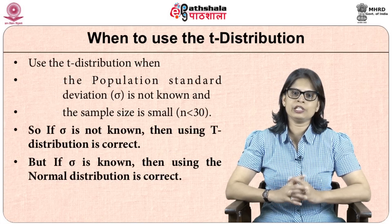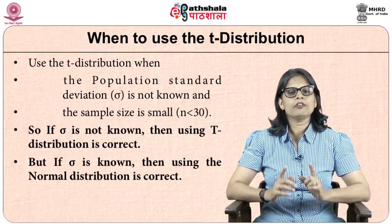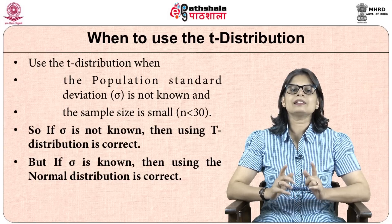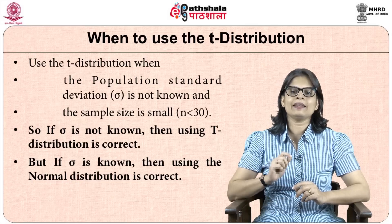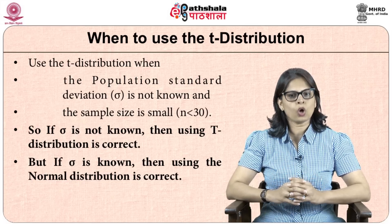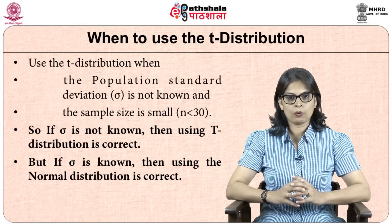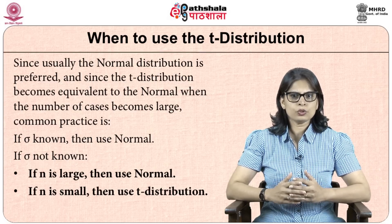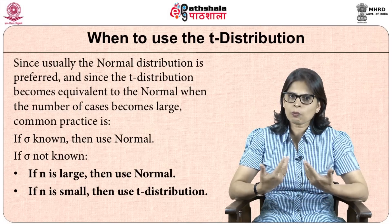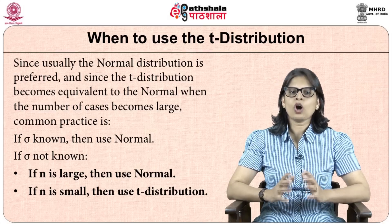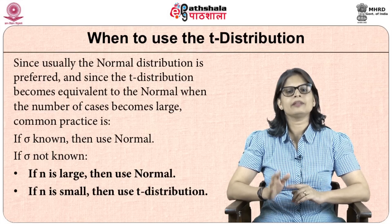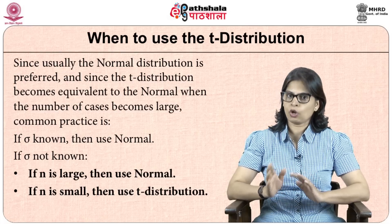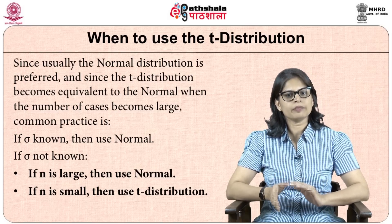We use the t-distribution when the population standard deviation sigma is not known and the sample size is small, that is n less than 30. If sigma is not known, using the t-distribution is correct. However, if sigma is known, using the normal distribution is more appropriate. In practice: if sigma is known, use the normal distribution; if sigma is not known and n is large, use the normal distribution; and if n is small, use the t-distribution.